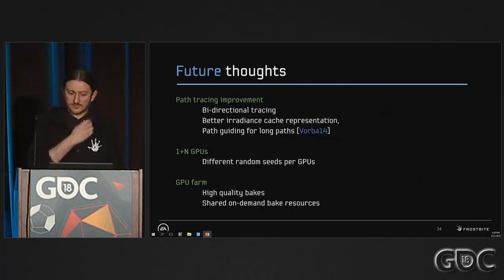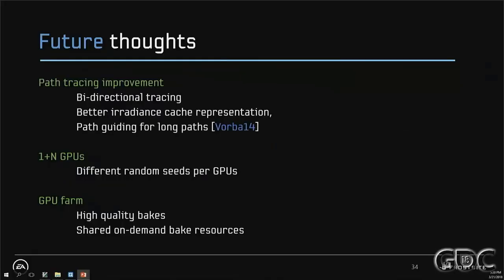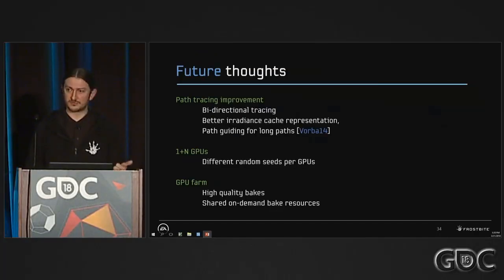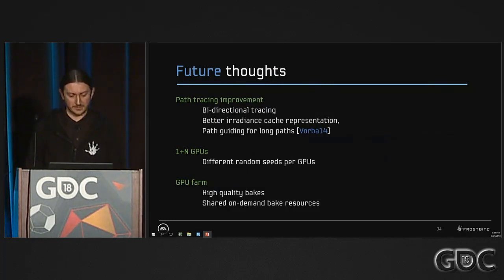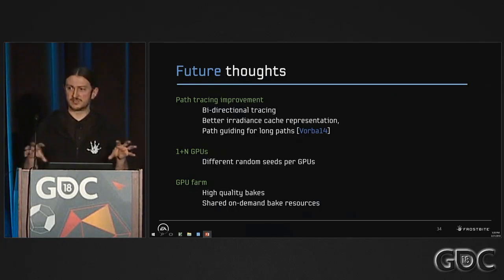Looking at future improvements: path tracing can definitely be improved — we have a basic version with a basic irradiance cache. All the research conducted in that area could probably be applied and tried, at least things like multi-directional path tracing, path guiding, and maybe a better irradiance cache representation.